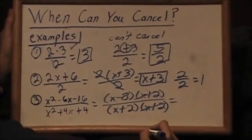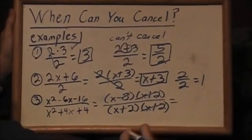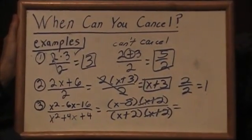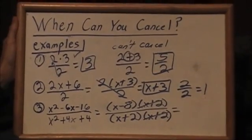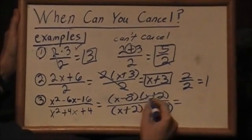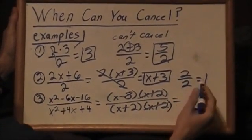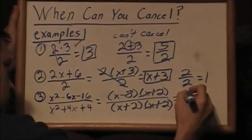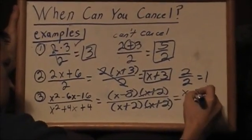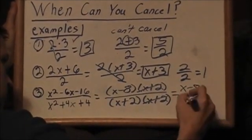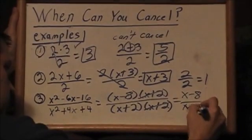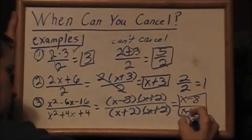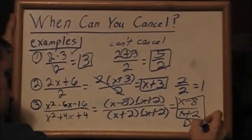Tell me, when, when, when can you cancel? Tell me, when can you cancel? When factors are the same, we cross out to get one. Write down what's left and then you're done. That's when, that's when, that's when I can cancel. Yes, that's when I can cancel.